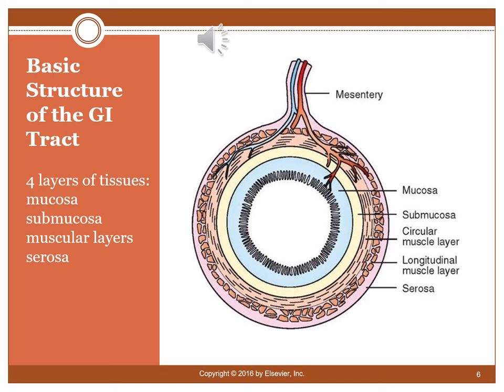Within the GI tract wall there are four layers of tissue. The mucosa is the innermost layer facing the lumen — the hollow inside of the tube. Behind the mucosa is the submucosa (sub meaning under). Then there is the muscular layer, which has two parts: the circular muscle layer and the longitudinal muscle layer. On the outside is the serosa, which is what you see when looking into an animal's abdominal cavity during surgery. Mucosa is always the inside layer and serosa is always the outside.